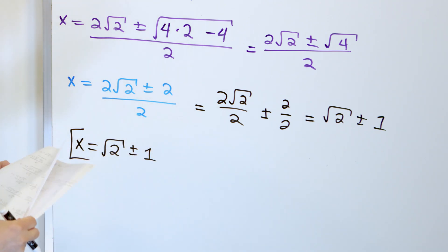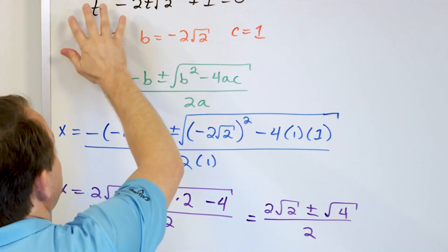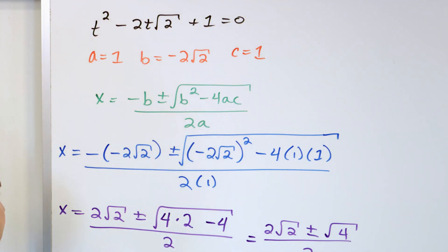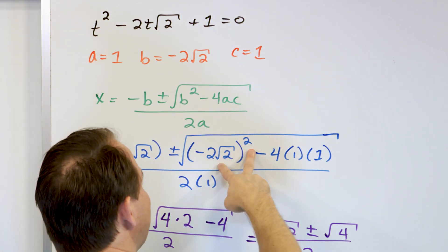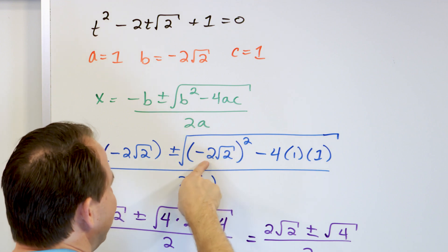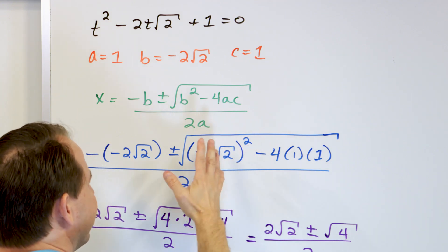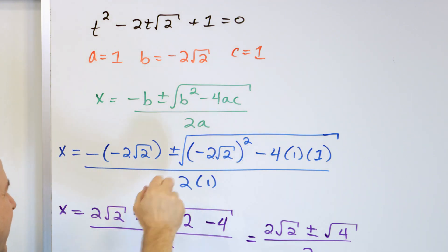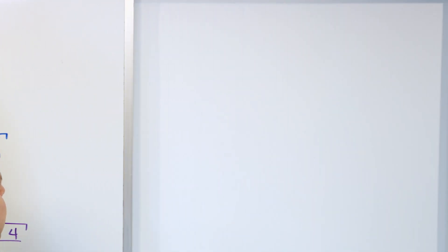The moral of the story, the punchline, the reason I'm doing this: if you see radicals in your equation, you just have to be a little more careful about what you do — especially the squaring operation. A lot of students will forget to square the 2 and will just apply the square to the radical, or do some variation on that, and get the wrong answer.